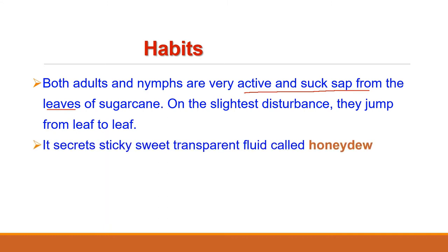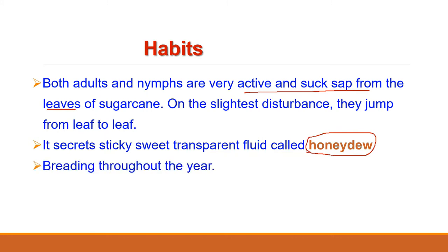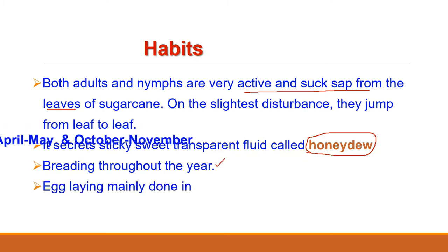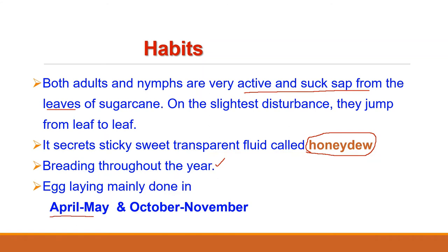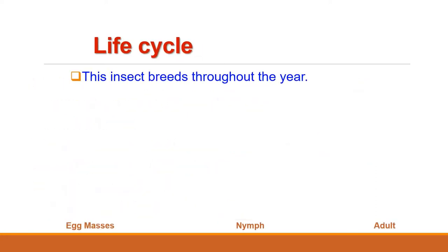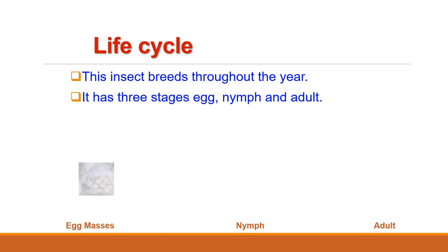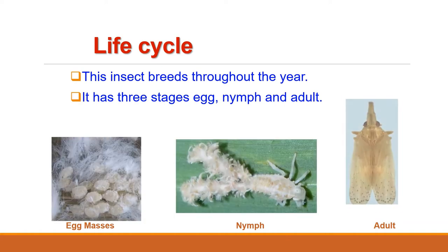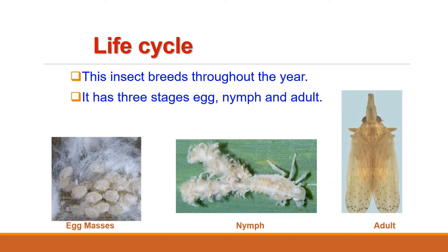Pyrilla creates a sticky sweet transparent fluid known as honeydew. Breeding is performed throughout the year; egg-laying is mainly done in April, May, and October–November. There are three stages in the life cycle: egg, nymph, and adult. The life cycle is completed in 40 to 60 days.